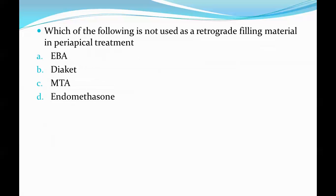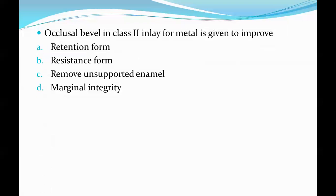Next question: which of the following is not used as a retrograde filling material in periapical treatment? The options are EBA, diaket, MTA, and endomethazone. The correct answer is Option D, endomethazone. Endomethazone is a zinc oxide eugenol-based sealer and is used as an orthograde filling material, not retrograde.